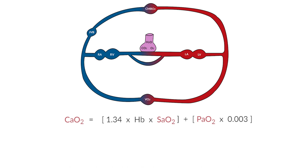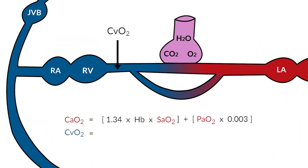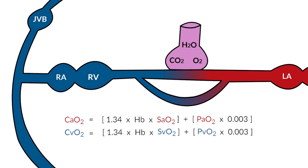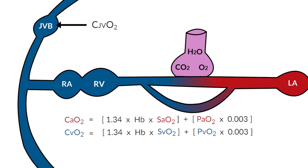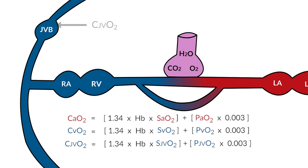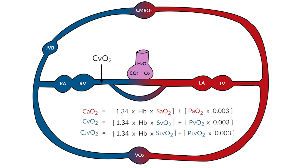The arterial oxygen content equation can also represent venous content of oxygen — the oxygen content of blood after it's passed through the circulation. The formula is the same, but what you change is you have a mixed venous saturation and partial pressure of venous oxygen. Similarly, the same thing can be said for the content of jugular venous bulb oxygen — same values, different units depending on where the blood is sampled. The difference between venous content of oxygen and the oxygen content of blood after it's passed through the central nervous system is something we'll return to when we talk about tissue consumption of oxygen.